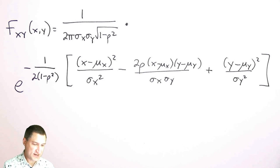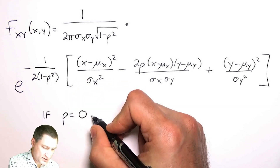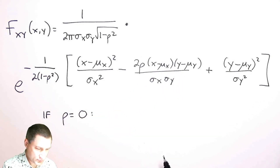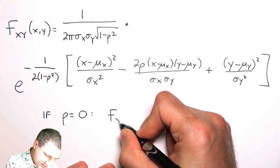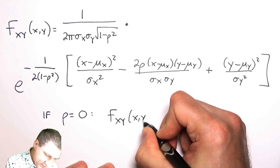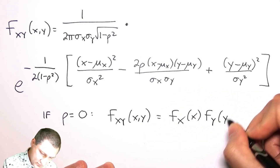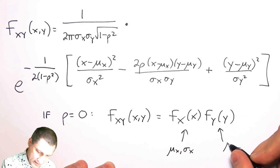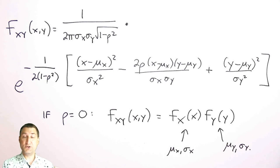One thing to notice immediately is that if rho equals 0, then a lot of stuff is easier. The cross term goes away, this becomes just 1 over 2, and I can decouple the x part and the y part. So when the correlation coefficient is 0, what I get is just the product of two Gaussians — one Gaussian with mean and sigma in x, and another with mean and sigma in y.